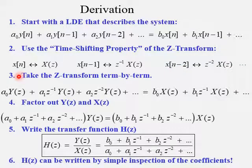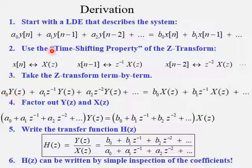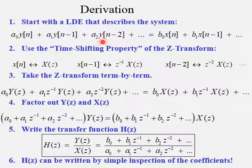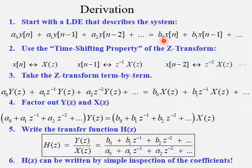We can use this time-shifting property to take the z-transform of our LDE term by term. The first term, a0 times y of n, becomes a0 times Y of z. The second term, a1 times y of n minus 1, becomes a1 times z to the minus 1 times Y of z. The next term, shifted by 2, becomes a2 times z to the minus 2 times Y of z. On the right side, b0 times x of n becomes b0 times X of z, and b1 times x of n minus 1 becomes b1 times z to the minus 1 times X of z, and so on.